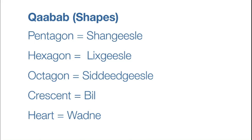As a side note, if you want to say a shape past the octagon, you would want to say the number of sides the shape has and then gasla. So if we wanted to say a decagon, for example — a 10-sided shape — you would say toban, and then gasla: toban gasla.